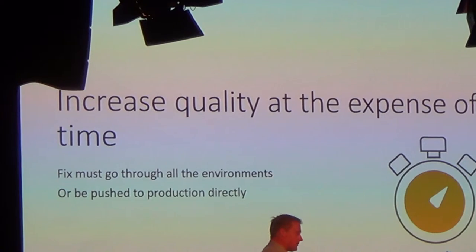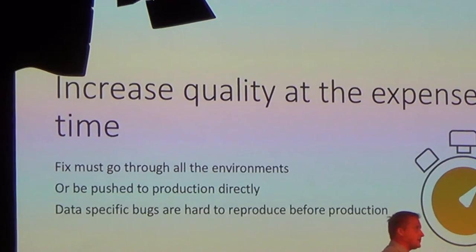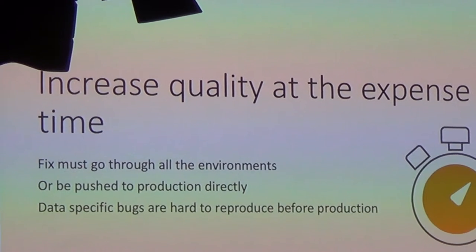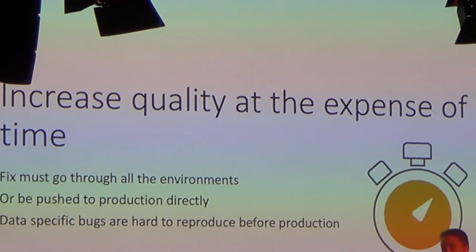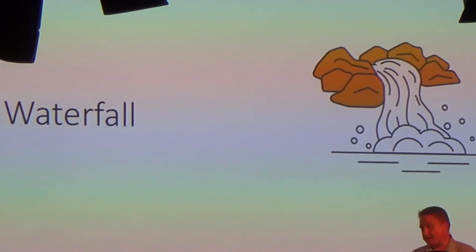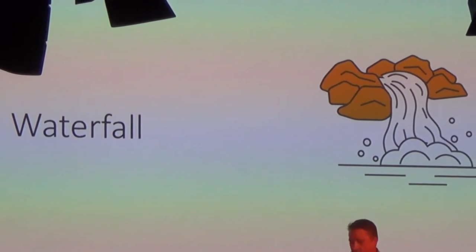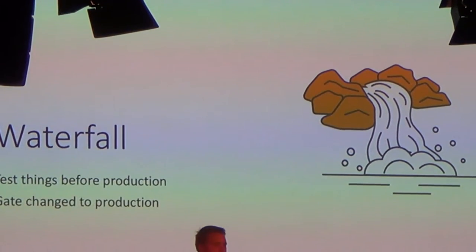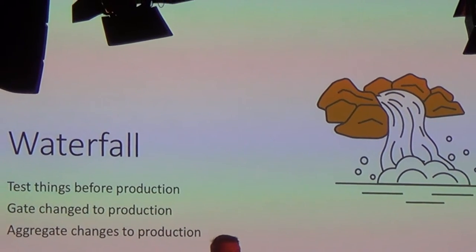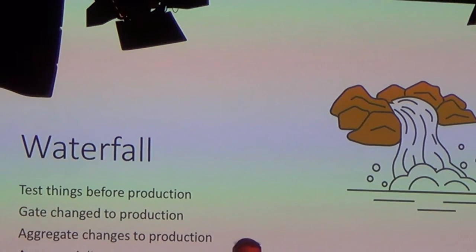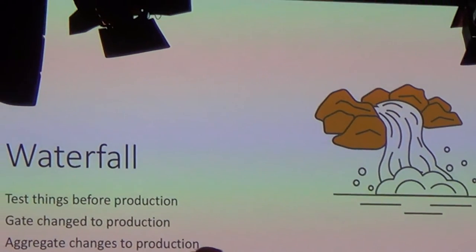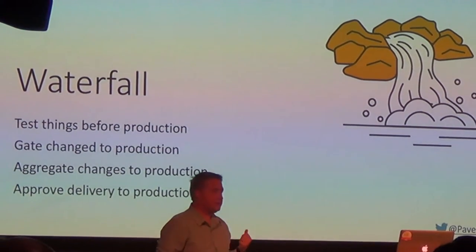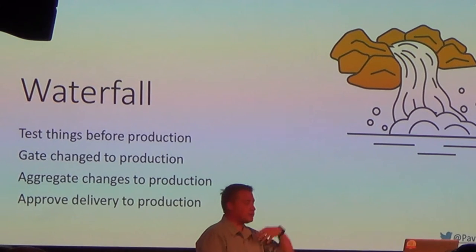Another problem is that it's hard to test and find data-specific bugs in pre-production environments. This, to me, is part of the waterfall mentality — the idea that you need to test things before production, that you need to aggregate or approve changes to production. And regardless of digital transformation, a lot of companies are still doing this. I believe this belongs to the waterfall world.